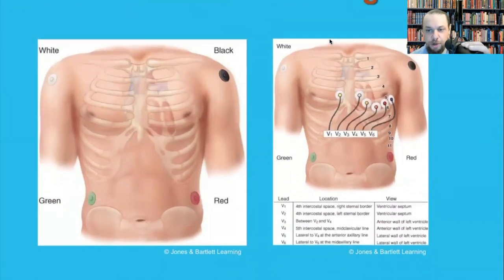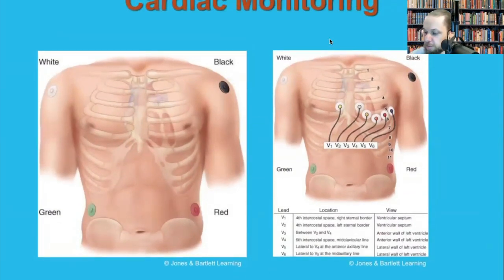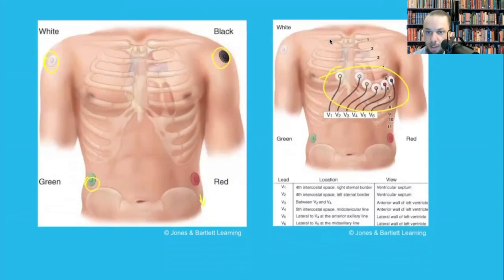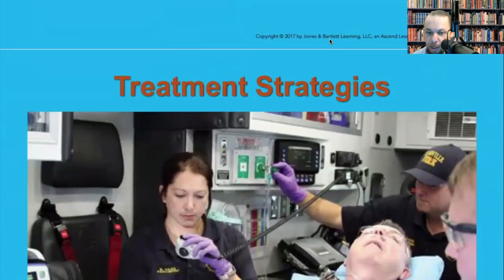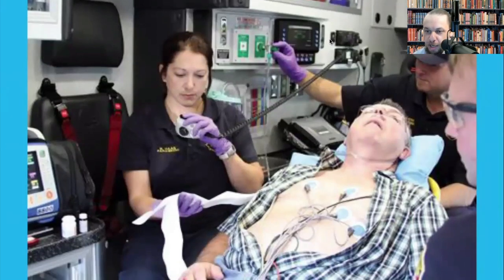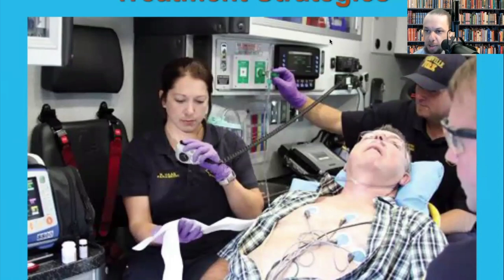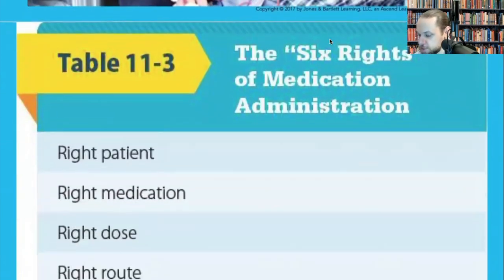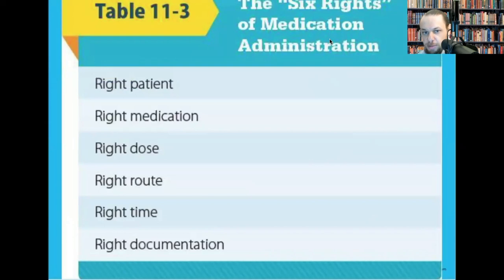For cardiac monitoring, you'll learn to place limb leads on the limbs and cardiac leads to look at the heart. Now let's talk about treatment. Whether you transmitted a 12-lead to a doctor in a rural setting or called ALS which is still responding, and the patient is having chest pain — before administering any treatments, make sure you go through the six rights.